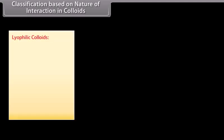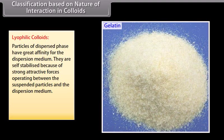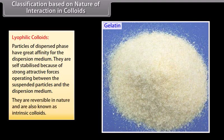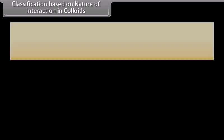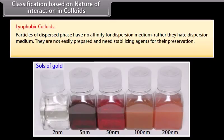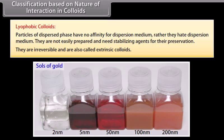On the basis of the nature of interaction between dispersed phase and dispersion medium, colloids are divided into two categories. Lyophilic colloids have great affinity for the dispersion medium; they are self-stabilized, reversible, and also known as intrinsic colloids — for example, gums, starch, gelatin, and albumen. Lyophobic colloids have no affinity for the dispersion medium; they are not easily prepared, need stabilizing agents, are irreversible, and are also called extrinsic colloids — for example, salts of gold, silver, and ferric hydroxide.